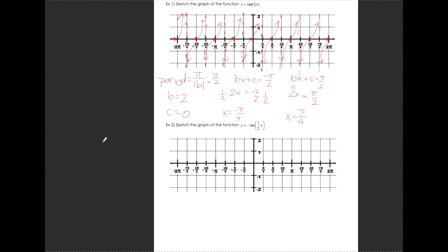For y = -tan(½x): the negative is important — it reflects the graph over the x-axis, so rather than going up, it goes down. The period is π divided by b = ½, so the period is 2π. c is 0. Solving ½x = -π/2 gives x = -π, and solving ½x = π/2 gives x = π. So I have vertical asymptotes at -π and π.